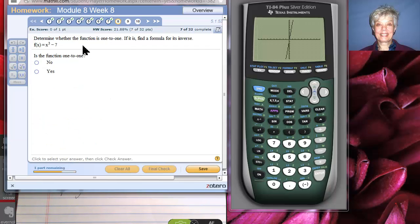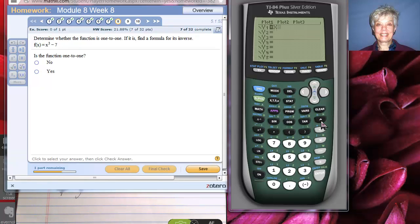Determine whether this function is 1 to 1. If it is, find a formula for its inverse. Let's clear this. And I'm going to say x carat 3. And then right arrow key to bring the cursor down. Minus 7. x to the 3rd minus 7. I'm going to graph it.